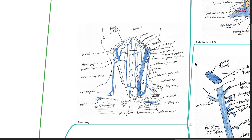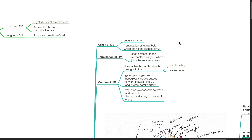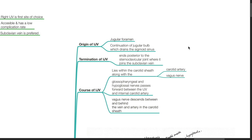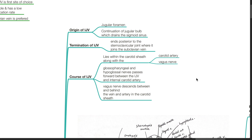Anatomy of the IJV: The internal jugular vein originates from the jugular foramen and is a continuation of the jugular bulb, which drains the sigmoid sinus. It ends posterior to the sternoclavicular joint where it joins the subclavian vein. It lies within the carotid sheath along with the carotid artery and the vagus nerve. The glossopharyngeal nerve and the hypoglossal nerve pass forward between the IJV and the internal carotid artery.